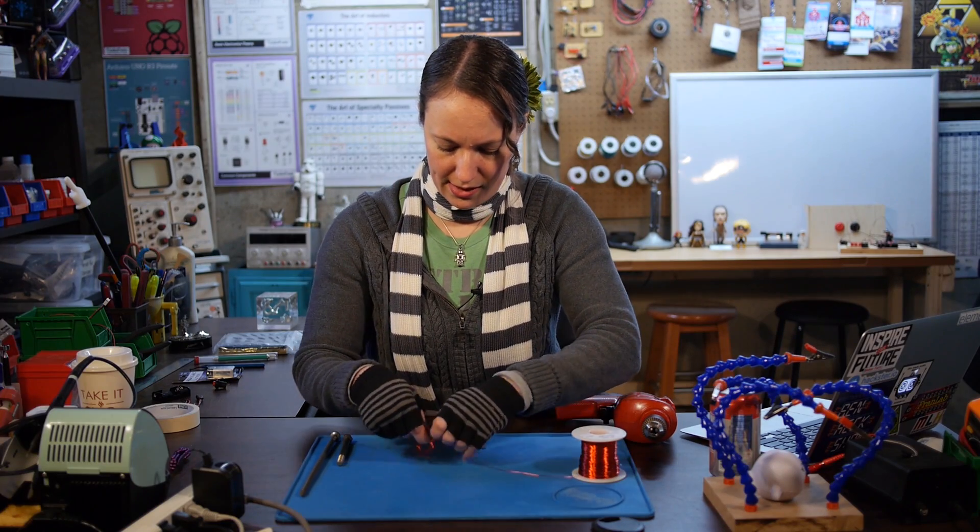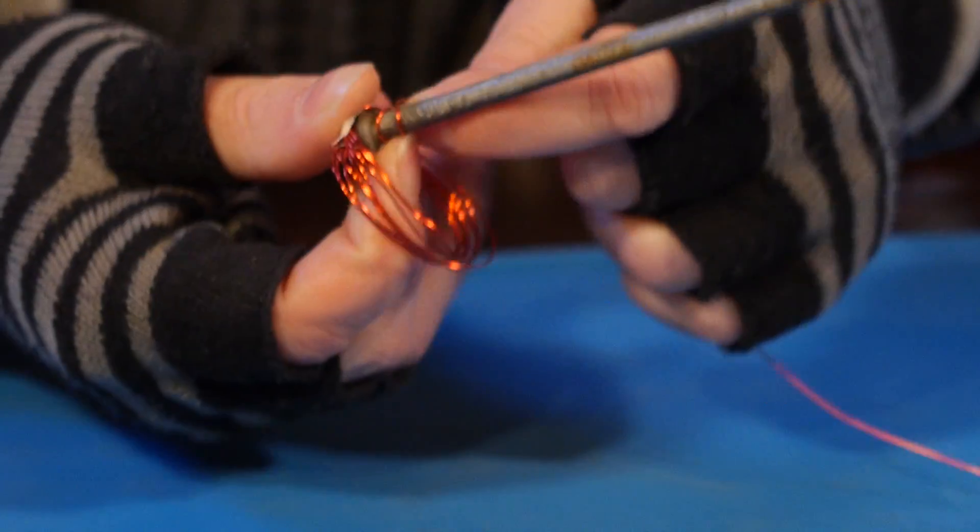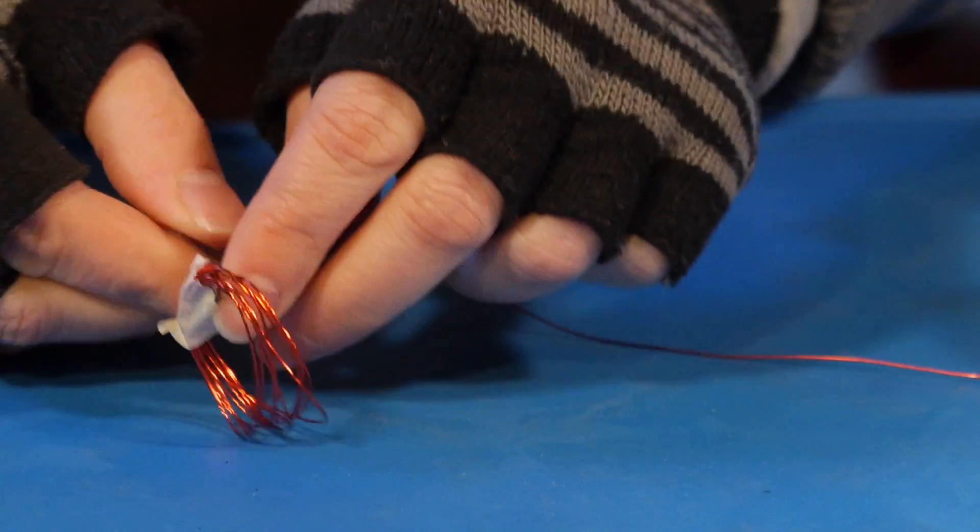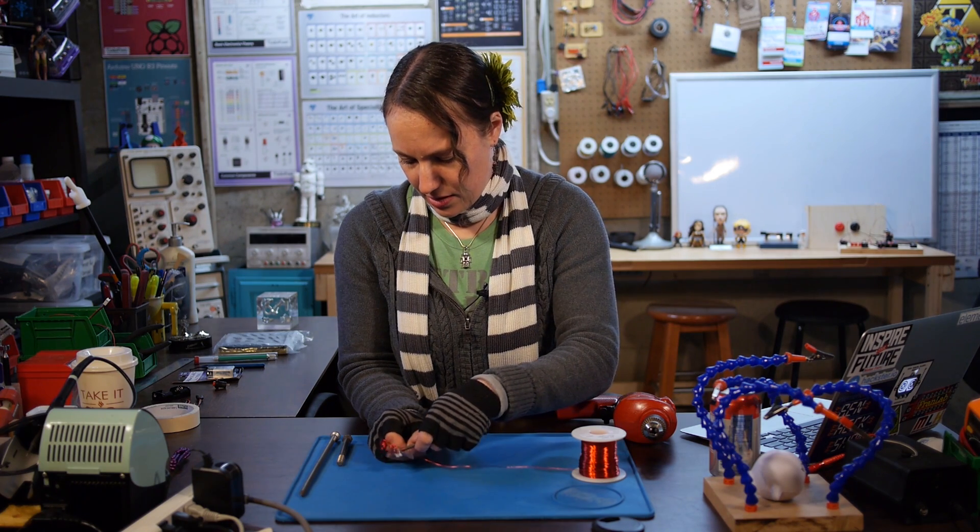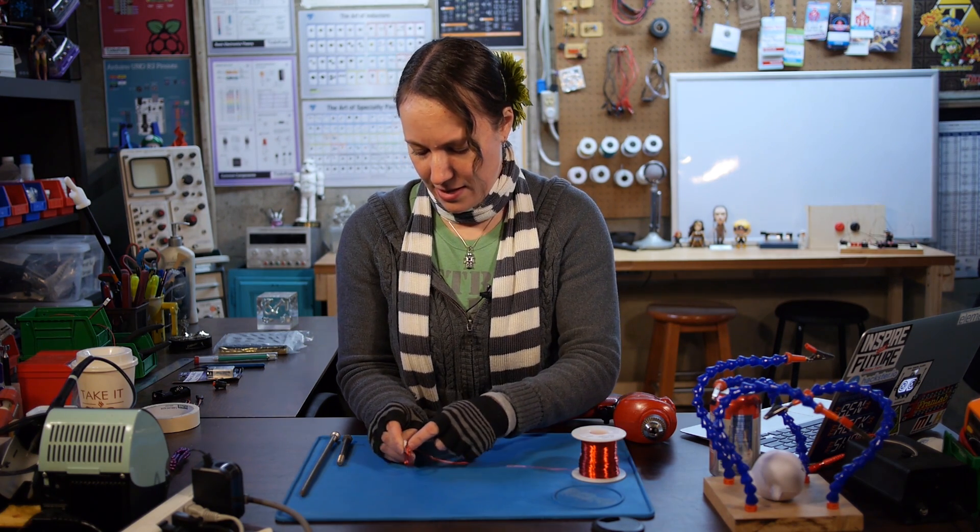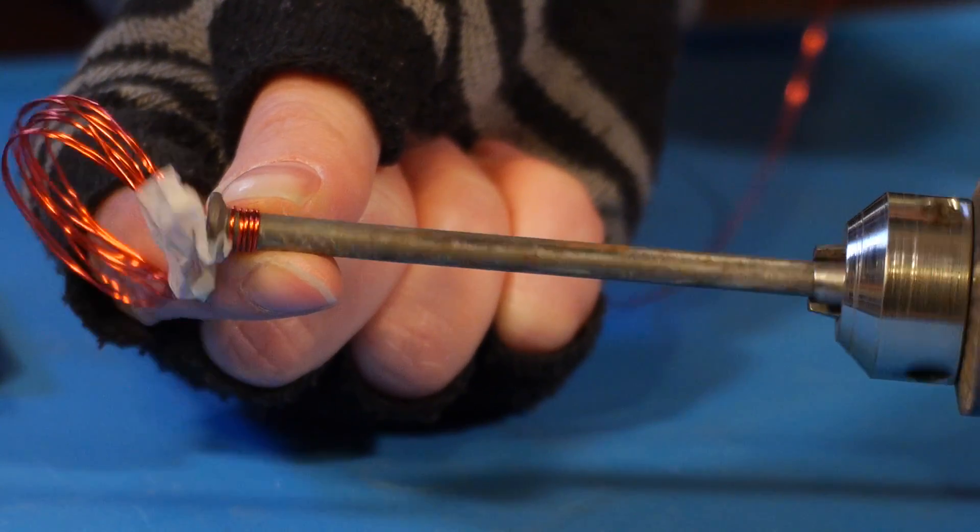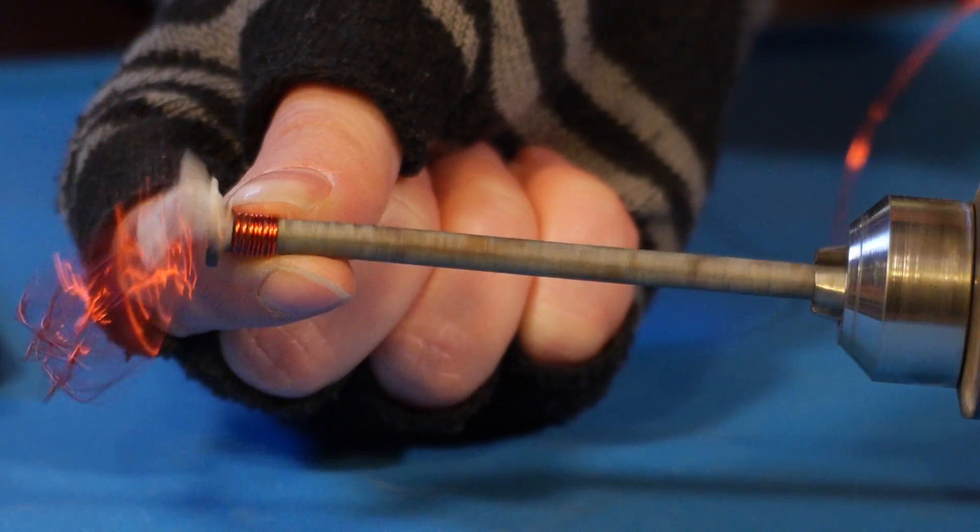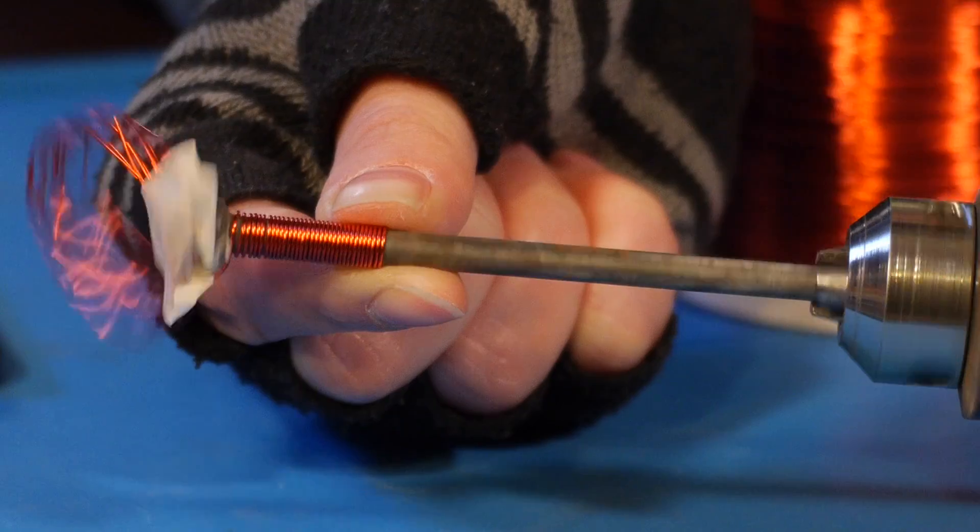Start wrapping your wire as tight as you can to the core and keep your coils as close together as possible. I'm a little on the lazy side so we're going to chuck this up in a drill to make this process go faster. Wrap your coil as tightly as possible.